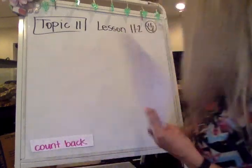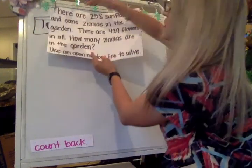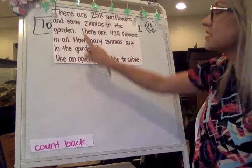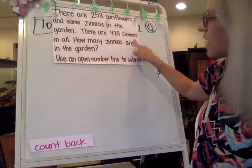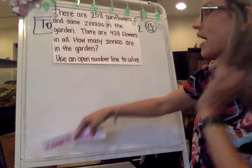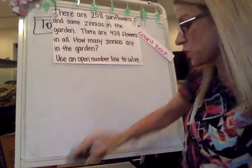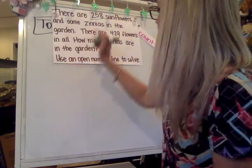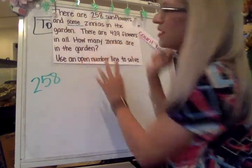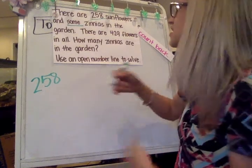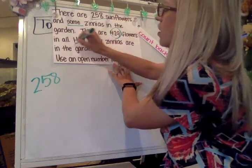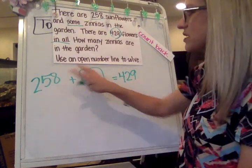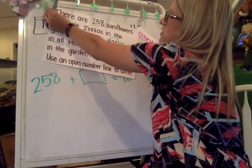So we're going to use counting back for our word problem. There are 258 sunflowers and some zinnias in the garden. There are 429 flowers in all. How many zinnias are in the garden? Use an open number line to solve. I told you we're going to use count back for this, and so that's what we're going to do. But step one, we've got to figure out what the equation is asking of us. So just to do a reread, we've got 258 sunflowers. And it says that we have some zinnias. We don't know how many zinnias that that is. That sum is just a something in the garden. There are 429 flowers in all, so that tells us what it equals up to be. But we don't know how many zinnias, so remember we can just put this with a box. I'm going to modify what this equation looks like so that I can solve it on my open number line a little bit easier.